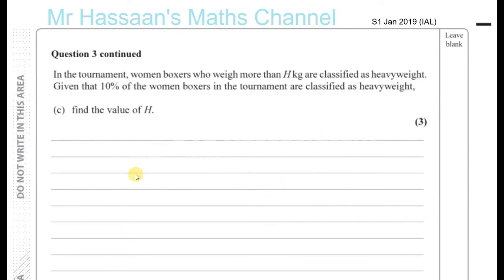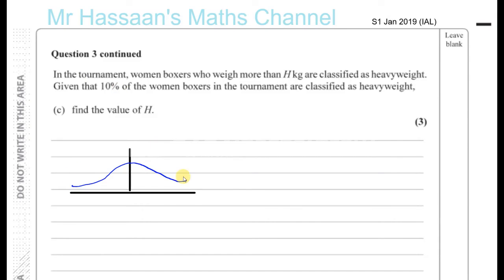Women boxers who weigh more than H kilograms are classified as heavyweight. Given that 10% of the women boxers in the tournament are classified as heavyweights, find the value of H. On our bell curve, the heavyweights are classified as those who weigh more than H, and 10% of the boxers are heavier than that.